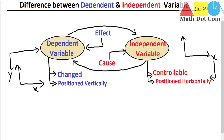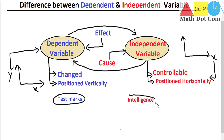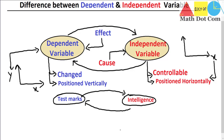Let's take examples to understand the concept better. We have two variables: test marks and intelligence. Test marks is the dependent variable and intelligence is the independent variable. Test marks are dependent on intelligence — if a person is intelligent, they will get better marks; if less intelligent, they will get less marks. So intelligence is the independent variable that is affecting the test marks, and due to intelligence, test marks are varying.